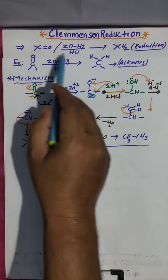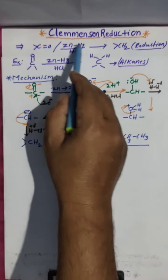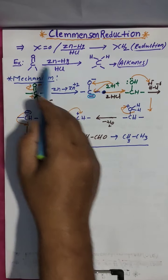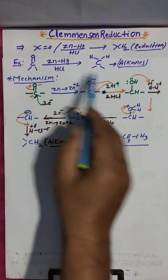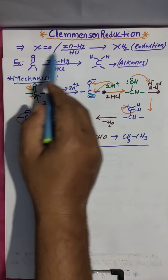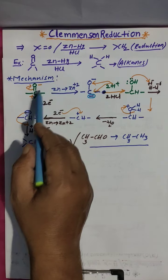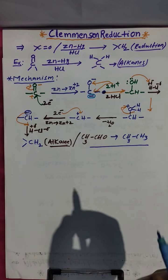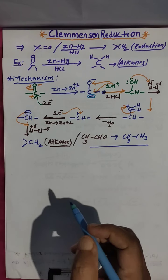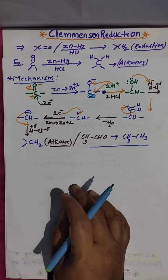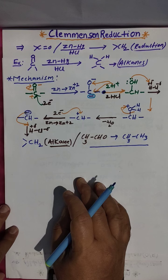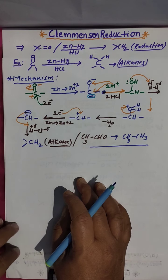This is Clemmensen reduction: aldehydes or ketones are reduced in the presence of zinc amalgam and HCl to alkanes. Zinc amalgam and HCl act as the reducing agent — zinc only takes part in the reaction, mercury does not. It is a very important and easy reaction. Please subscribe to my channel, share with your friends, and stay safe at home. Thank you.